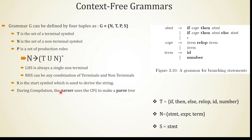During compilation, the parser uses the CFG to make a parse tree. The parser gets tokens as input and, based on this grammar, produces a parse tree. Earlier in lexical analysis, regular grammar is used where lexemes are converted to tokens. Here, context-free grammars are used to construct the parse tree.